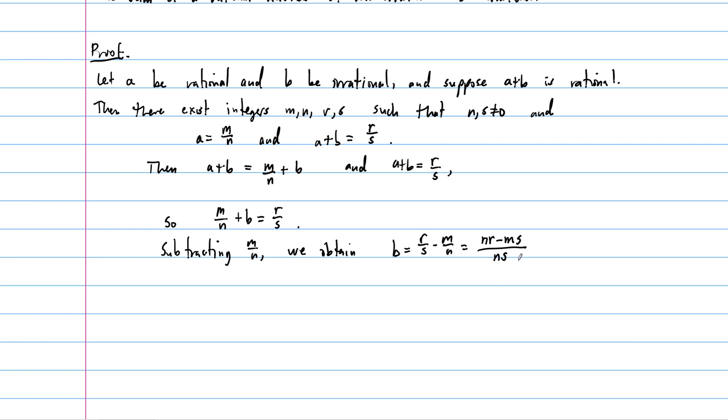Alright, and what else do we know? Well, the numerator and denominator are both integers. So N times R minus M times S is an integer. And what else is true? N times S is an integer.